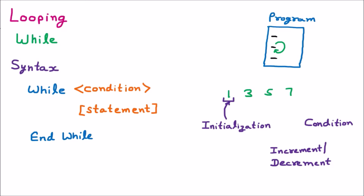The very first value from where the loop starts is called the initialization. Here, one is the initialization. In the while loop syntax, we take a variable — let's say i — and initialize it: i equals one. The second thing is the condition: the last value till where the loop goes. Our loop ends at seven, so the condition is i less than or equal to seven.